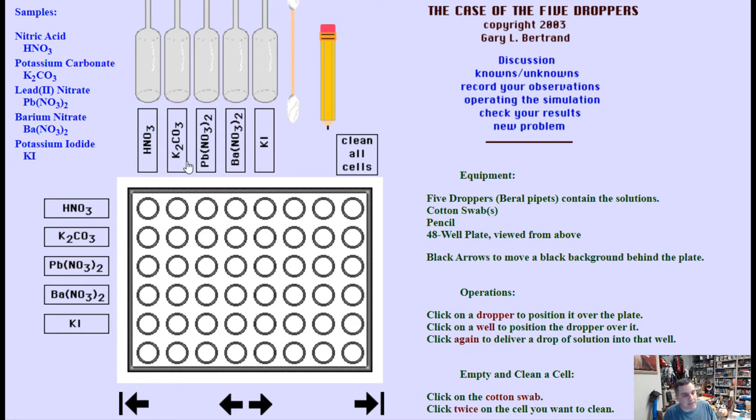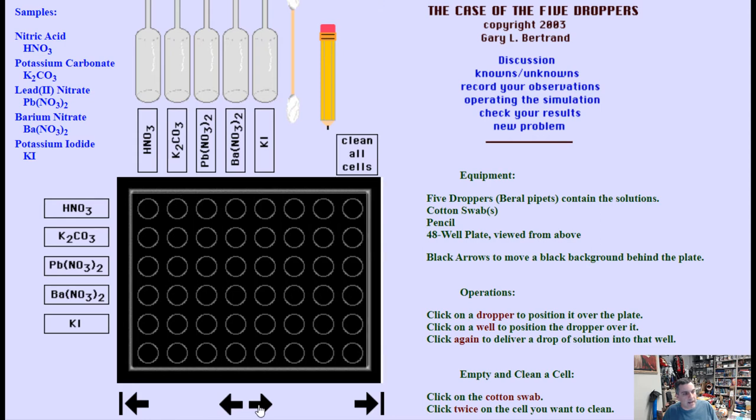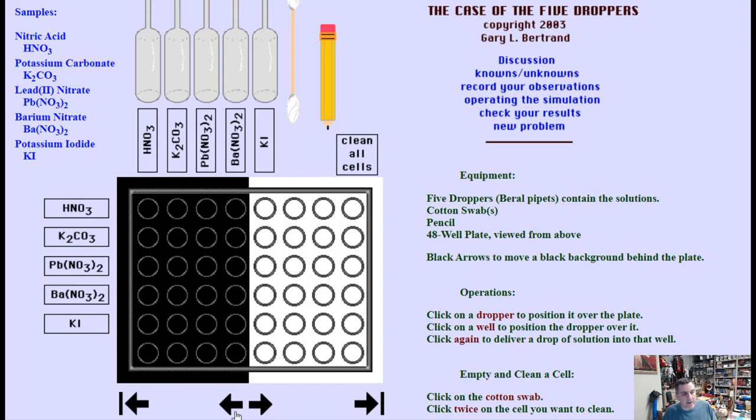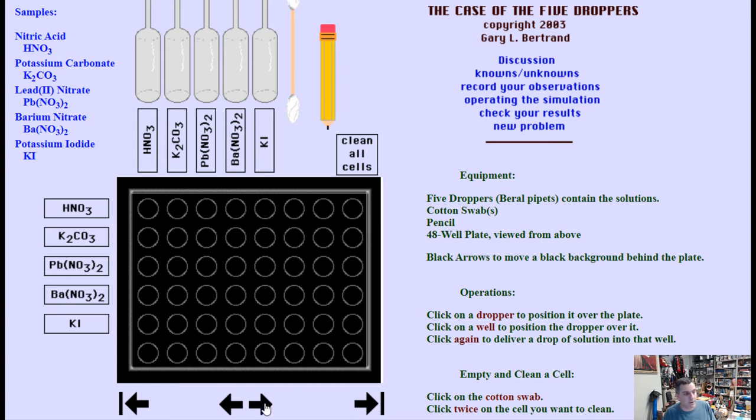First thing you want to do before anything else, and this kind of caught me the first time, is you want to use these black arrows here and slide a black background behind the well plate. What that lets you do is if you form a white precipitate, it lets you see that color against a black background. If you leave it with the white background, you're not going to see those white precipitates and you're going to get confused real quick.